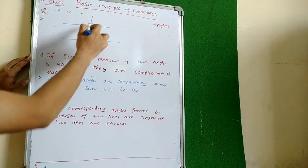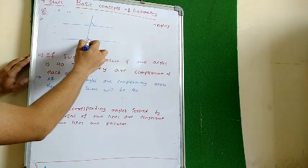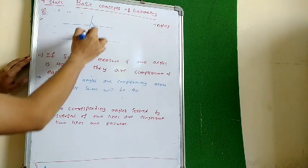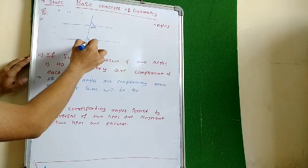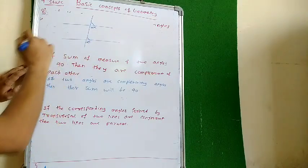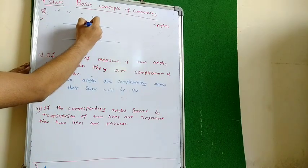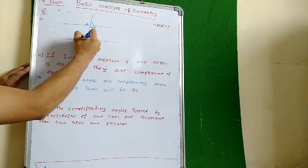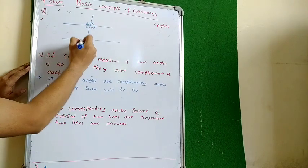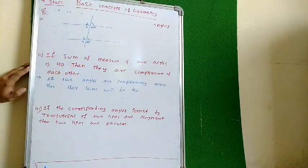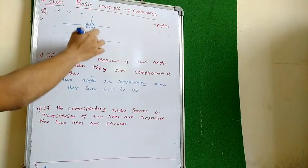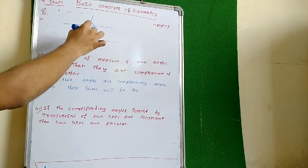The angle which is above the line is called a corresponding angle. Below the line is also called a corresponding angle. Same on the other side — above the line, corresponding angle; below the line, corresponding angle. These are the pairs of corresponding angles.